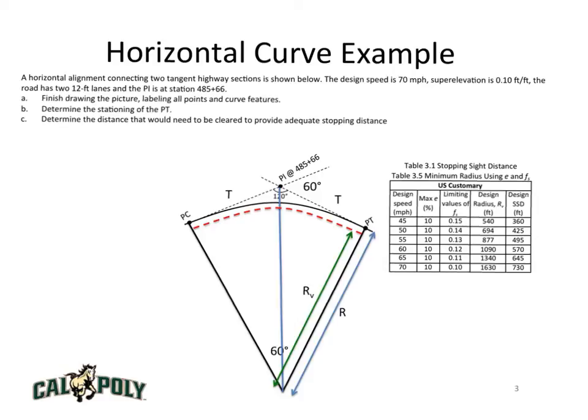R sub V is representing the center of the innermost lane. That's approximately the location of the driver's eye when going around the curve. This is something that sometimes people get confused about.